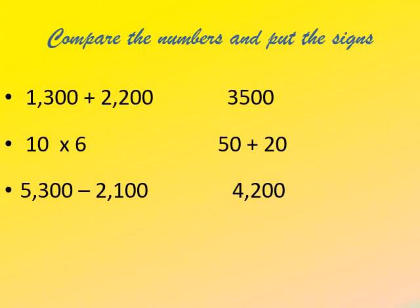Now we have more examples for comparing numbers where we need to do some working first. On the left side we have 1300 + 2200. When you add both numbers, the answer is 3500. The number on the right is also 3500, so both numbers are equal and we put an equal to sign.